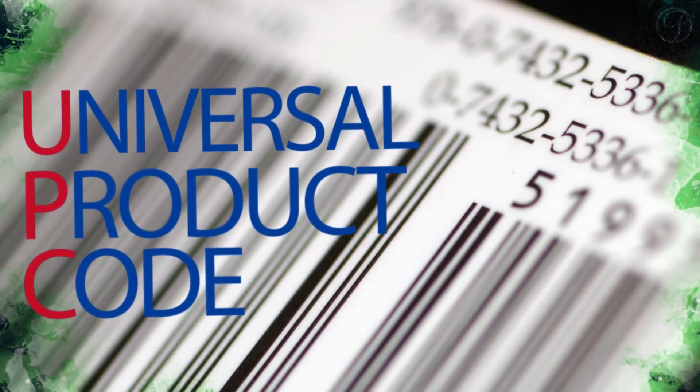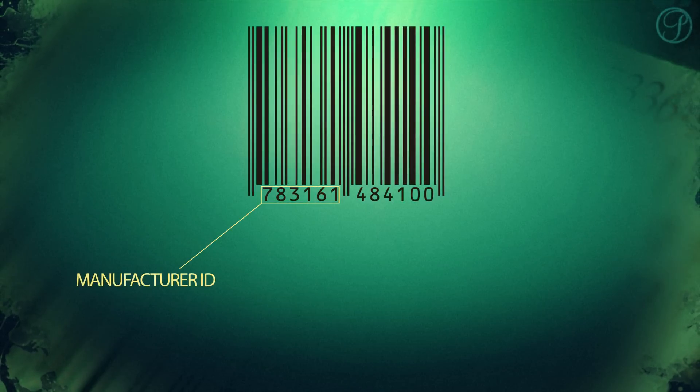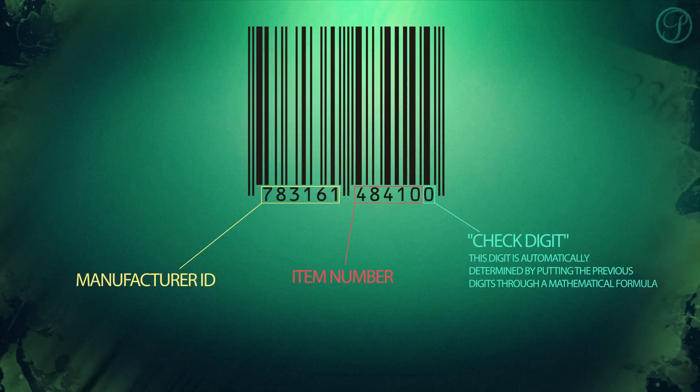The lines and numbers you find on just about every product you buy are called UPC, and they're designed to speed up the checkout process. The first six digits serve as an identification of the manufacturer. The next five digits are the item number, and the last digit is a check digit that lets scanners know whether they've read the code correctly or not.